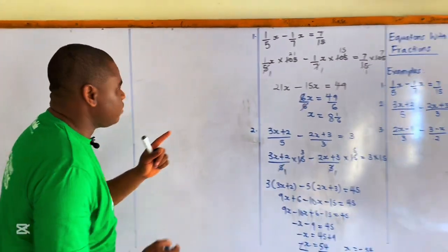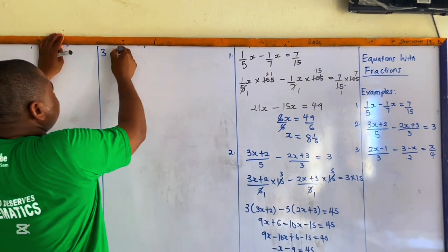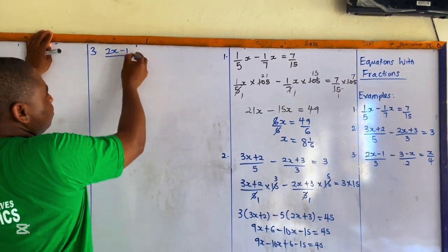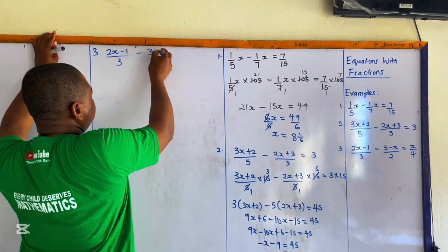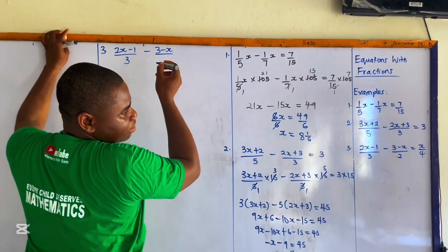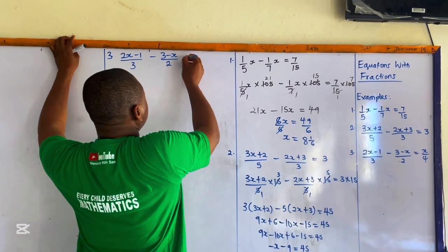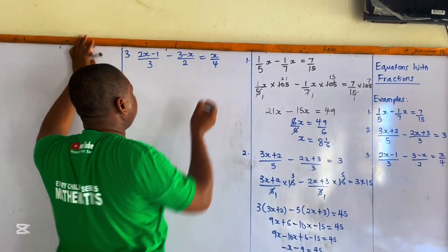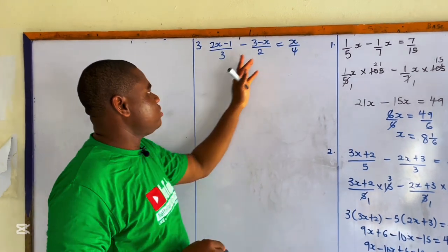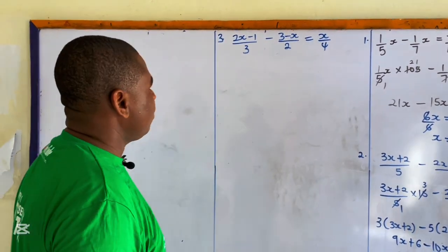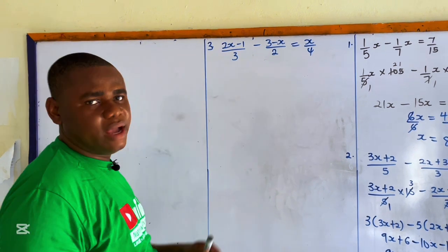For question three, we have: (2x minus 1) over 3, minus (3 minus x) over 2, equals x over 4. We need to find the LCM of the denominators 3, 2, and 4, which gives us 12. We are going to multiply all three terms by 12.